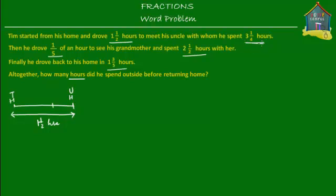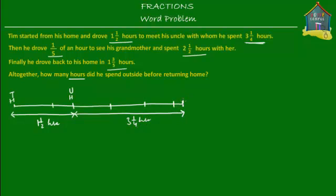Then he spends three and a quarter hours with his uncle — he chit-chats for about three and a quarter hours. So that would be one, two, and three, and maybe about this much is a quarter. So altogether this is three and a quarter hours. Then he drives a fifth of an hour to see his grandmother. A fifth of an hour is actually not much, it's just a small fraction. So this is a fifth of an hour, and that's how much time he takes to reach his grandma's house.